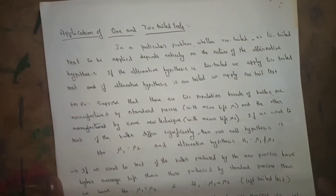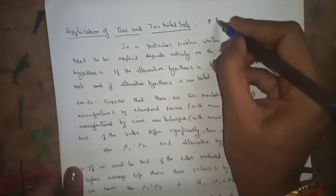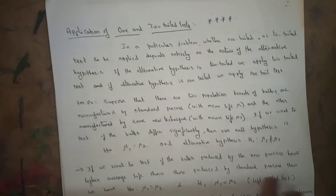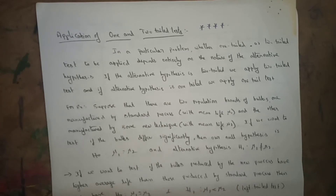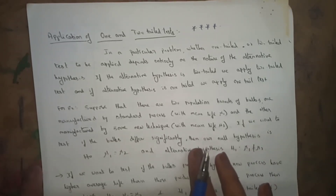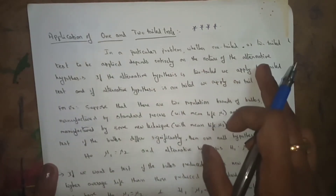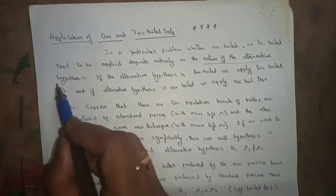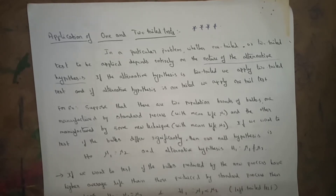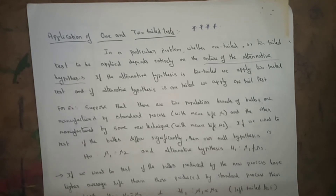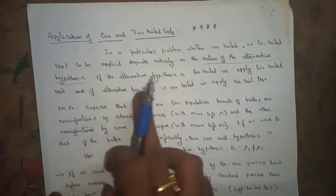Application of one and two-tailed tests: in a particular problem, whether a one-tailed or two-tailed test is applied depends entirely on the nature of the alternative hypothesis. If the alternative hypothesis is two-tailed, we apply a two-tailed test. If the alternative hypothesis is one-tailed, we apply a one-tailed test.